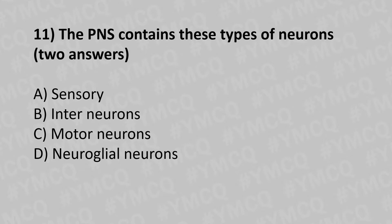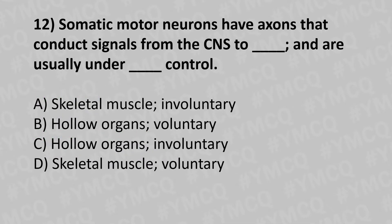Moving to our eleventh question. The PNS contains these types of neurons — two answers. Option A: sensory. Option B: interneurons. Option C: motor neurons. Option D: neuroglia neurons. And the answer is option A: sensory and option C: motor neurons.